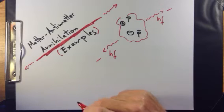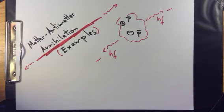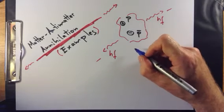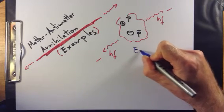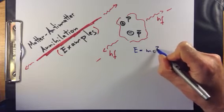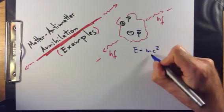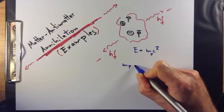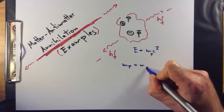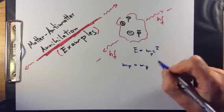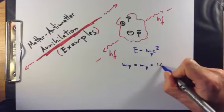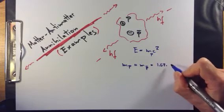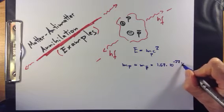We can calculate the frequency of these photons by taking advantage of the equivalence of energy and matter, as defined first by Einstein as E equals mc squared. What we need to do is look up the proton mass. mp, which is also the antiproton mass, mp bar, is equal to 1.67 times 10 to the minus 27 kilograms.